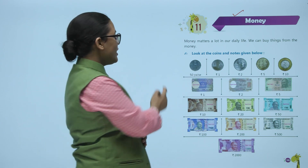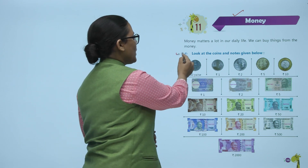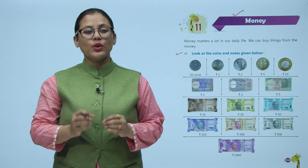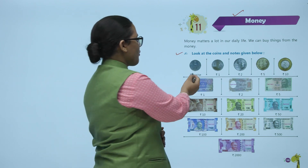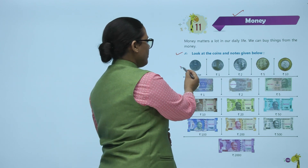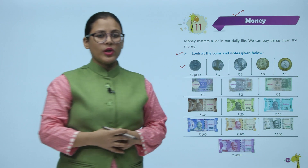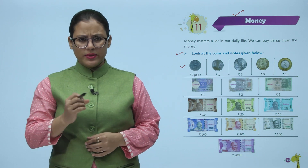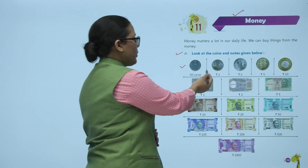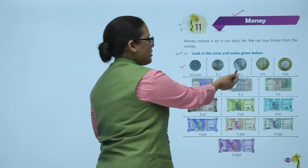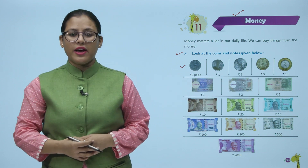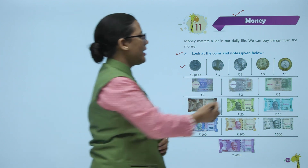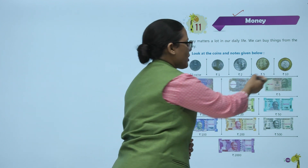Look at the coins and notes given below. You can see coins and notes. You can see a 50-paise coin, a 1-rupee coin, a 2-rupee coin, a 5-rupee coin, and a 10-rupee coin.